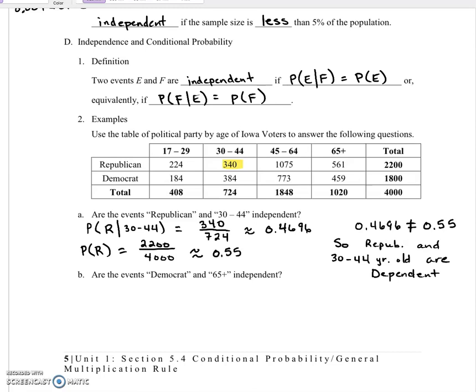Okay, what about being a Democrat and being 65 plus? So on part A of this problem, when I used the rule, I let Republicans be E and I let the 30 to 44 year olds be event F. This time I'm going to do it the other way around, just to show you using the other equation, just to show you that it works either way.